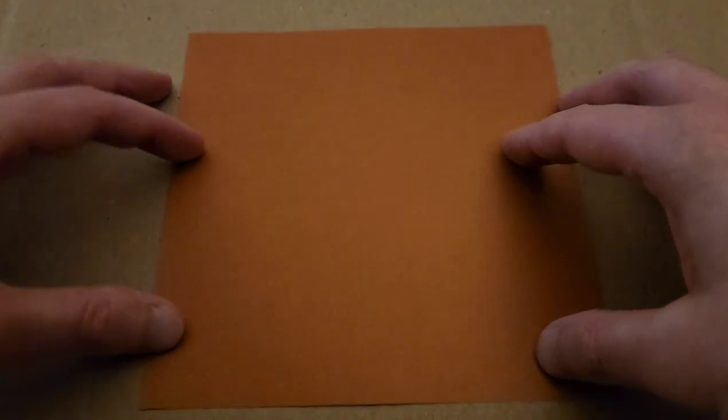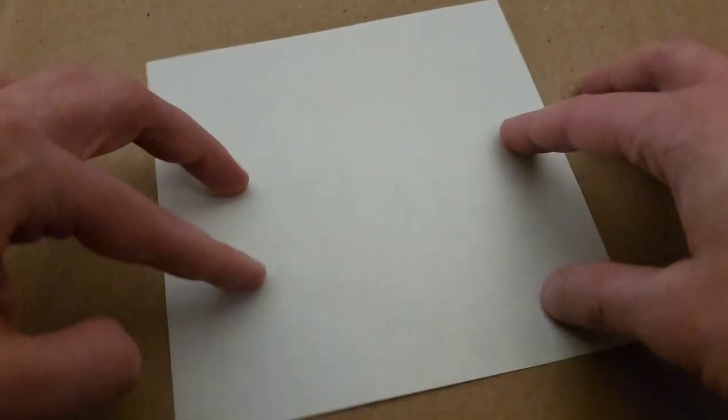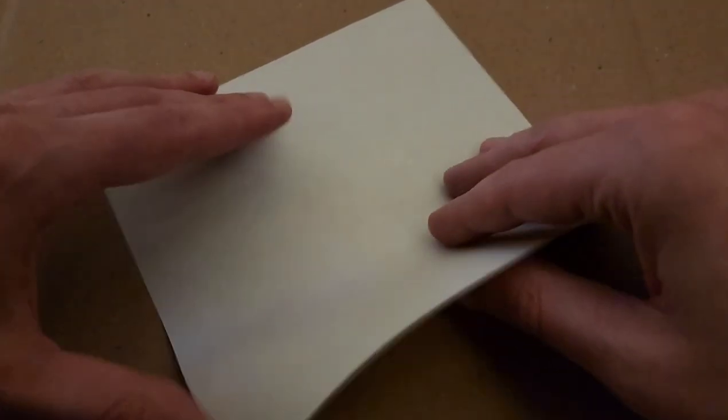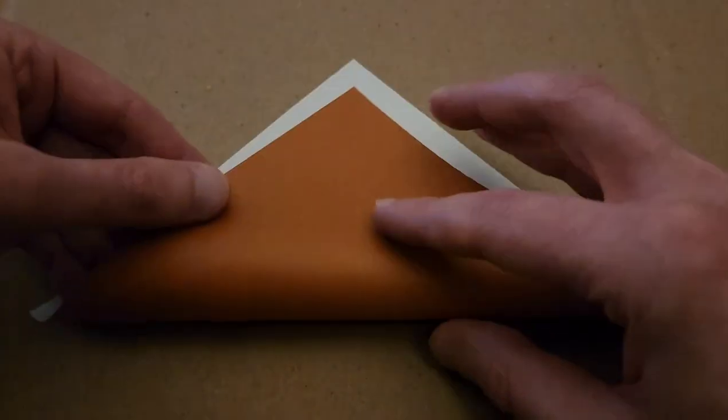Alrighty, so first things first, we're going to make some preliminary folds with the colored side facing down. I'm going to start by folding our piece into a triangle.